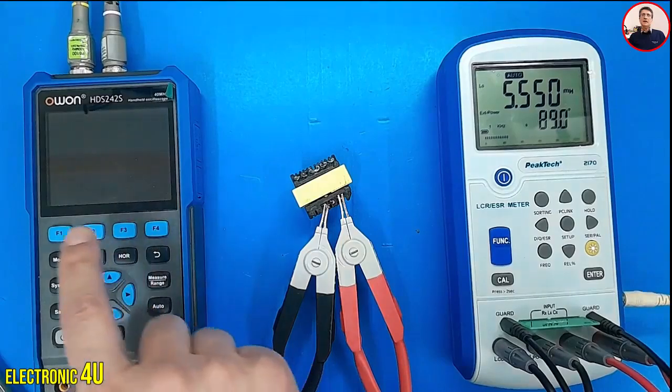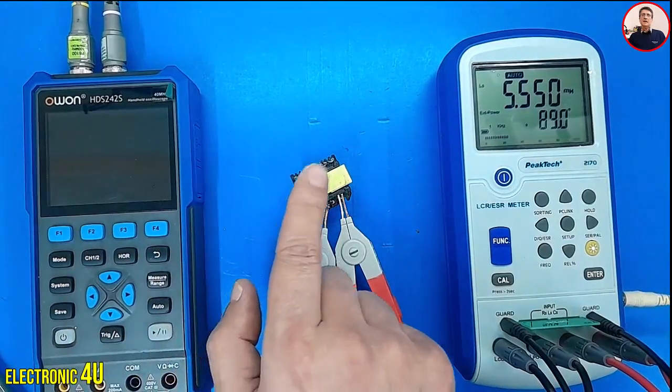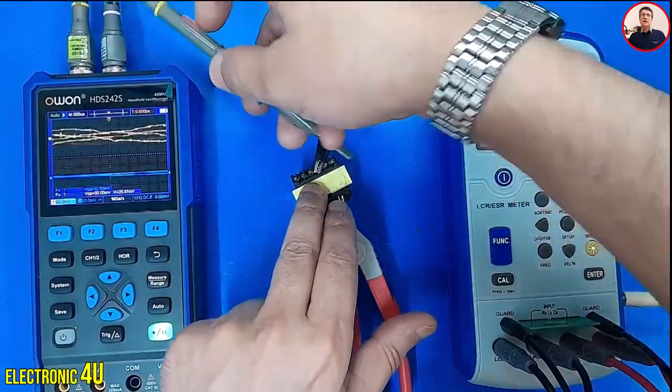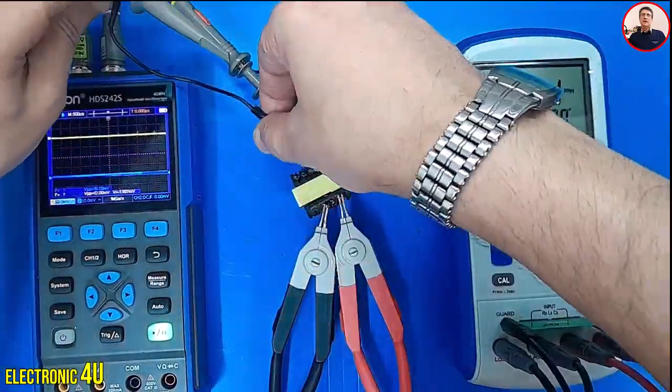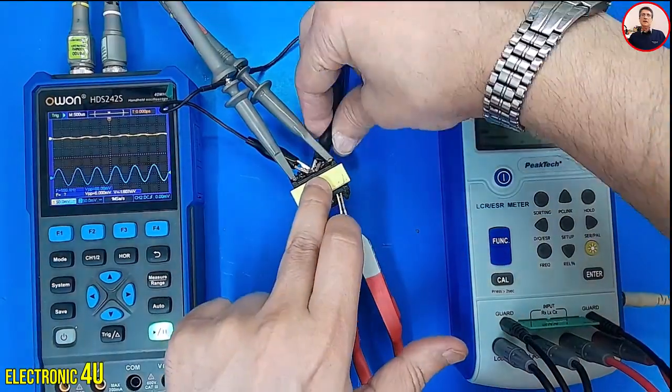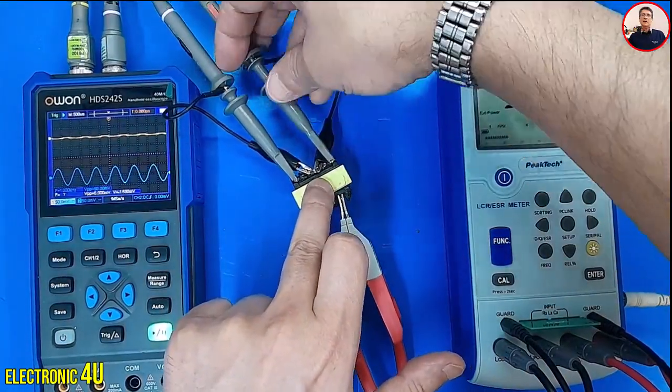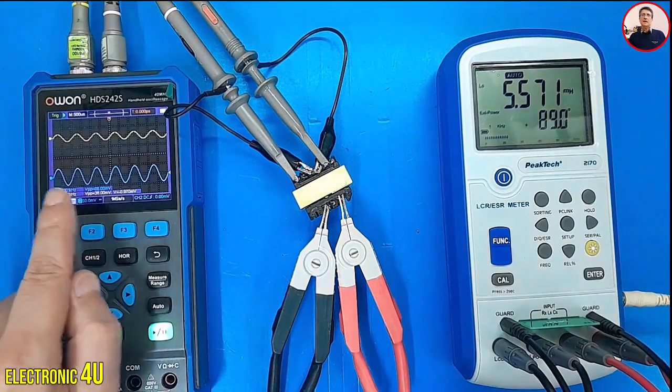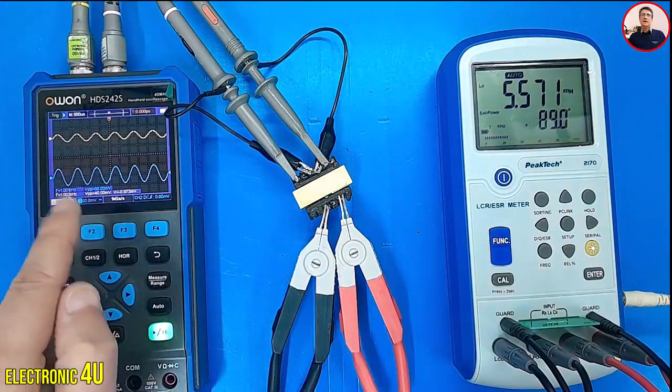We can use an oscilloscope to observe the waveform and frequency in the secondary winding as well. I connect the oscilloscope probes to the secondary winding. The phase angle is shown in the LCR meter. The waveform is also visible in the oscilloscope.